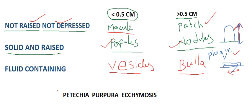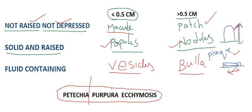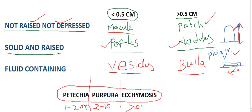Coming to extravasation of blood — we have three things to distinguish. If the lesion is from 1 to 2 mm, we call it petechiae. If the lesion is about 2 to 10 mm, we call it purpura. If the lesion is more than 10 mm, we call it ecchymosis.